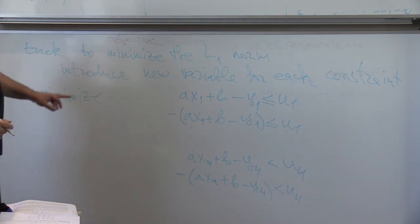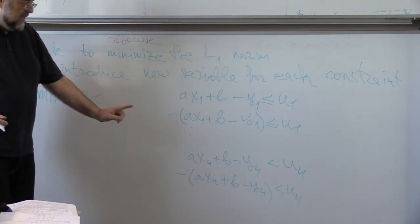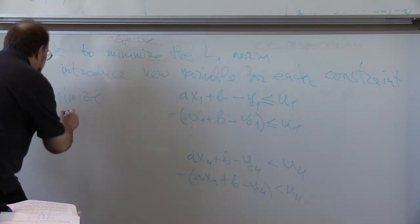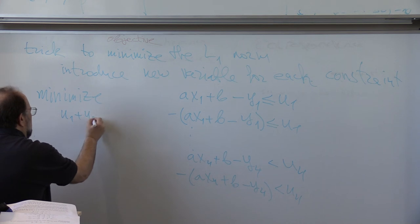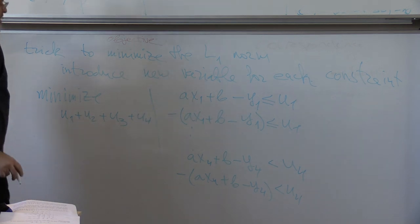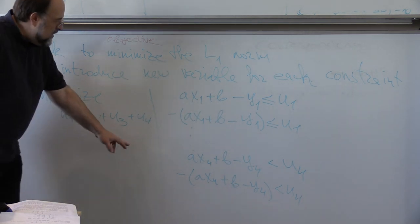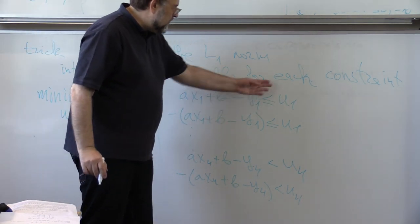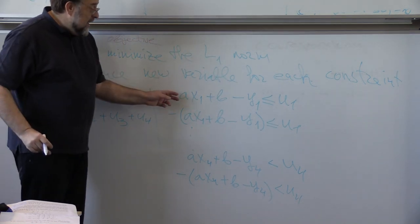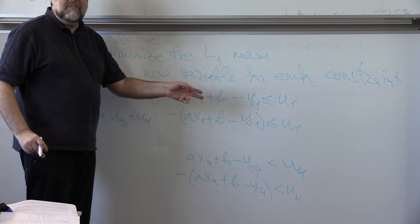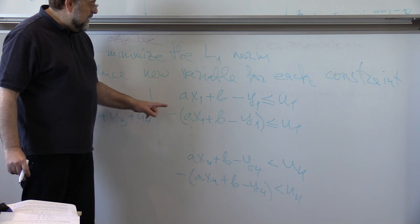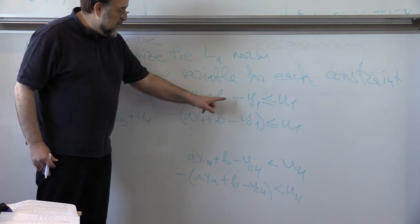What will be the objective if you want to minimize L1 norm? Exactly. Sum of u. Very good. Minimize u1 plus u2 plus u3 plus u4. And, lo and behold, voila, you have a linear objective and linear constraints. And, of course, u's can be assumed to be positive. But, of course, a's and b's can be both positive and negative. So, to allow for that, you will replace a by a1 minus a2 and b with b1 minus b2. And then you can force all the variables to be positive. So, this is a really important trick.